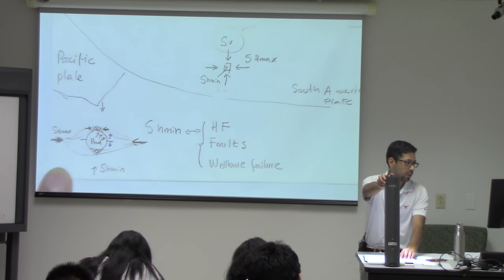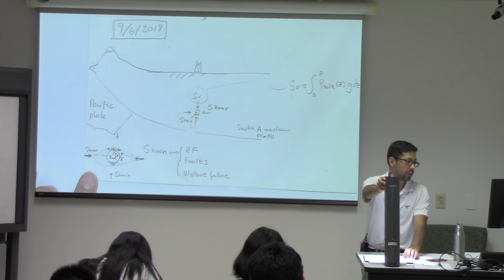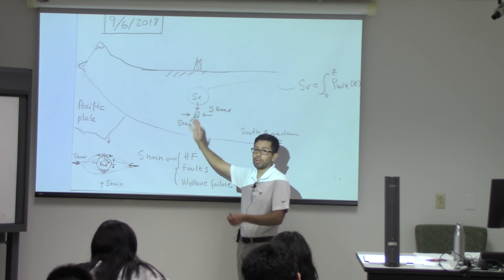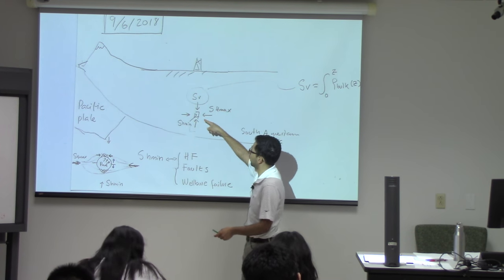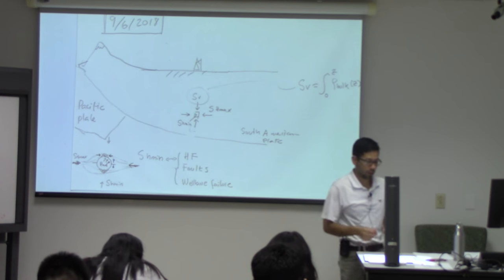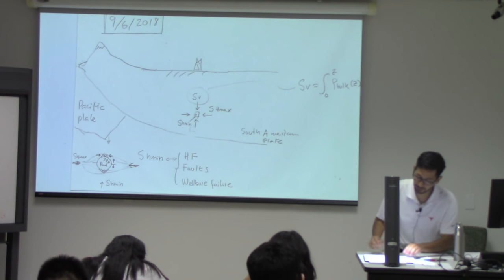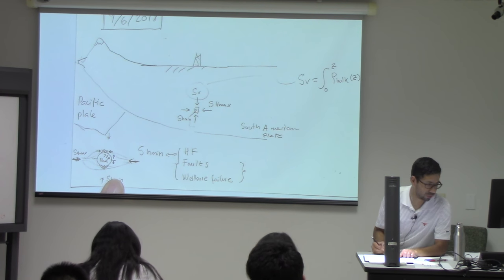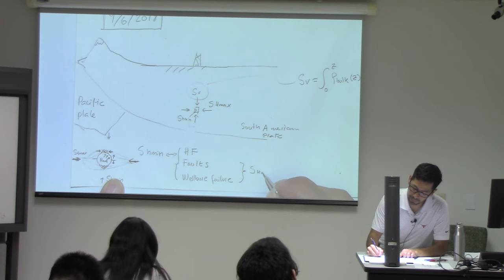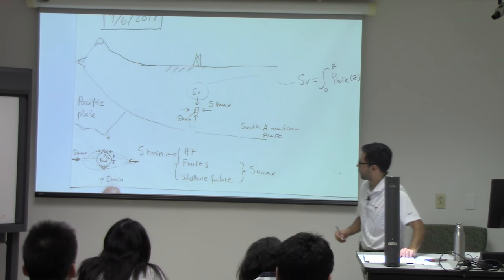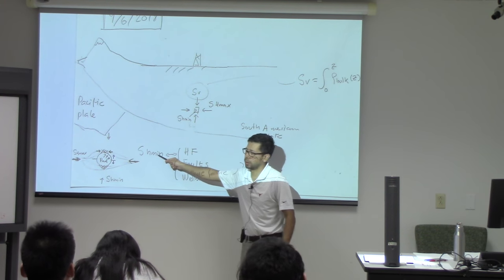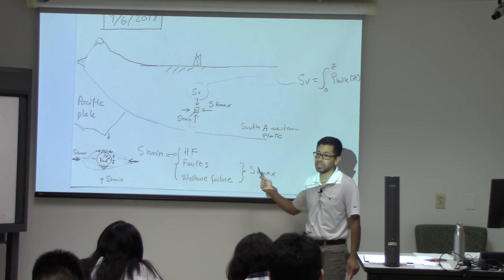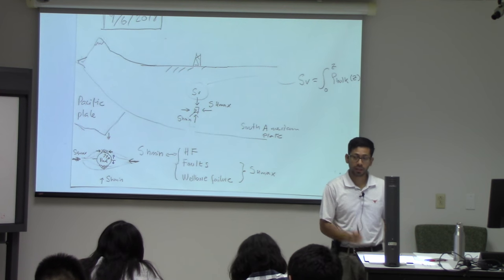These are just the main methods to determine what is the value and what is the orientation of SH-max — that's another thing. Because here we want to know the value, but also we want to know the orientation. For SH-max, you can determine those either through faults or through wellbore failure. Hydraulic fracturing is pretty good to determine SH-min, but that makes SH-max have a much higher uncertainty. We're going to see that later on too.